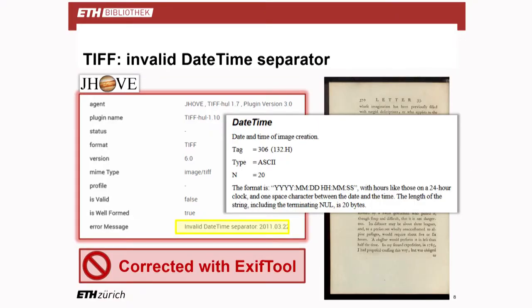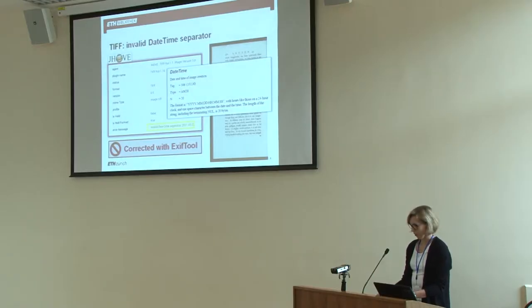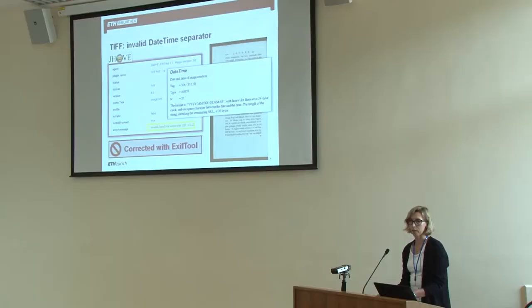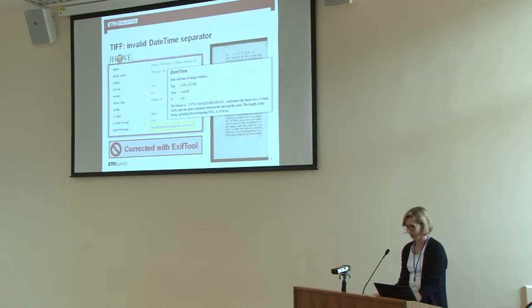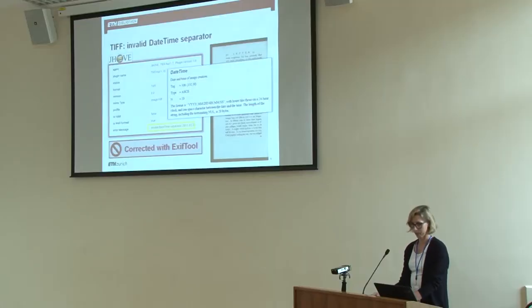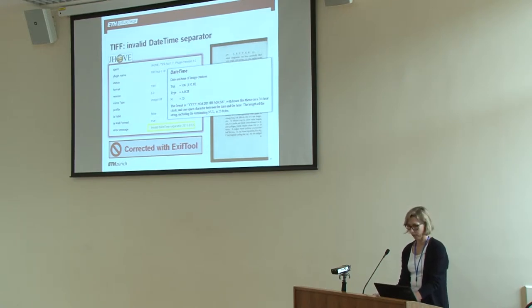This is maybe a rather trivial example. During some test ingest we got hold of a large number of TIFF files that looked perfectly all right, but Jove said they were not valid. The problem is with the date-time field, TIFF tag 306. The year, month, and day should, according to the TIFF specification, be separated by a colon, but in these files a dot is used instead. This might seem a petty issue, given that TIFF tag 306 is not even mandatory, but the correct formatting of this field is one of Jove's criteria for a valid TIFF file, and we wanted our digitized images to conform to the specification. So we corrected the date stamp prior to ingest using EXIF tool in an automated process.